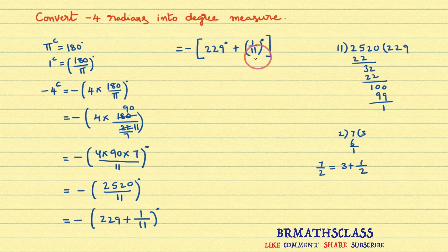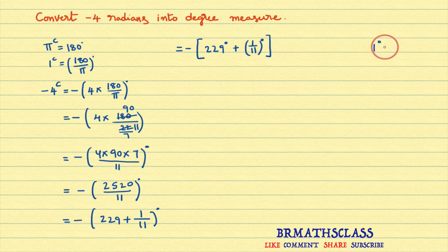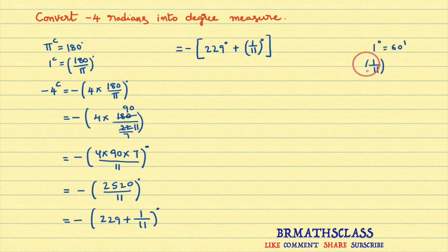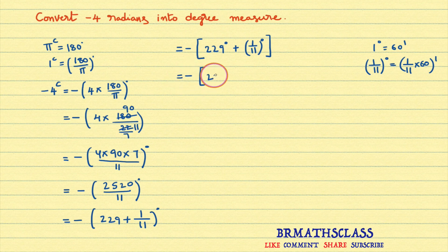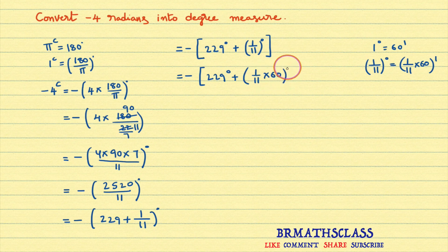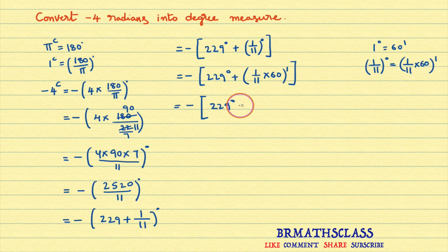Now I need to convert 1 by 11 degrees into minutes and further into seconds. In degree measure, 1 degree equals 60 minutes. I want 1 by 11 degrees in minutes, so multiply both sides by 1 by 11: 1 by 11 degrees equals 1 by 11 into 60 minutes. So the expression becomes minus 229 degrees plus 60 divided by 11 minutes.